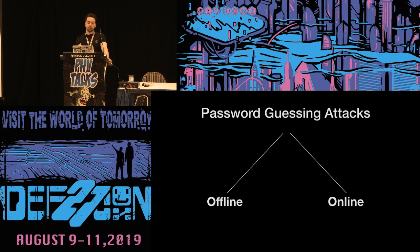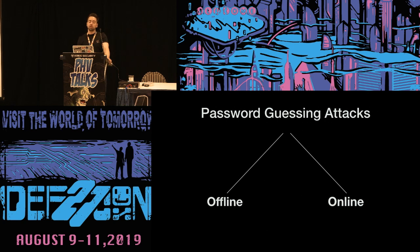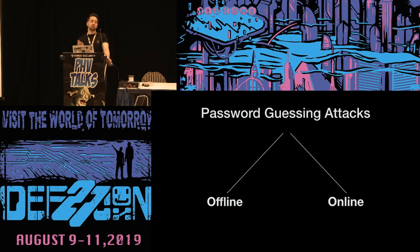Passwords are our main security mechanism for digital accounts since the beginning of the internet. Because of that, passwords are the main targets for attackers. There are lots of different ways to gather a target's password. For example, an attacker can prepare a phishing website to trick targets into entering their credentials to a rogue website, or conduct a password guessing attack through brute forcing.